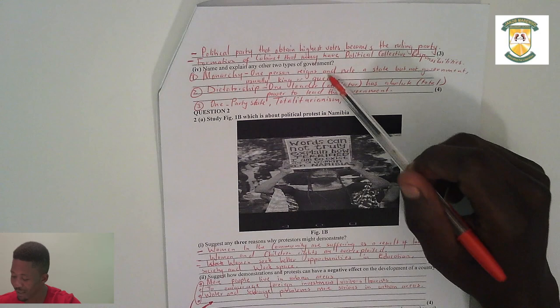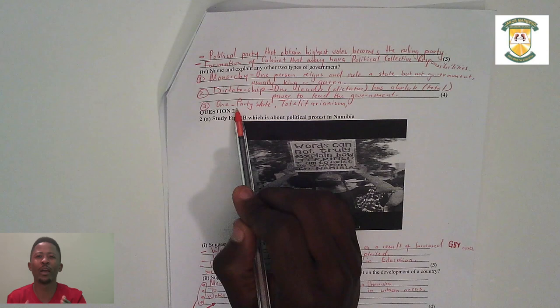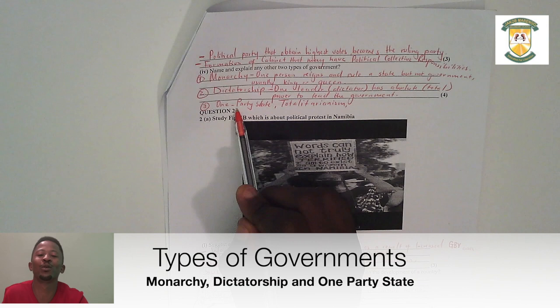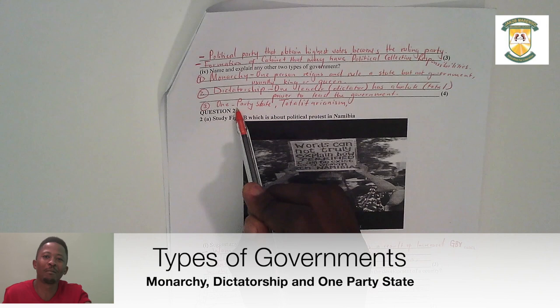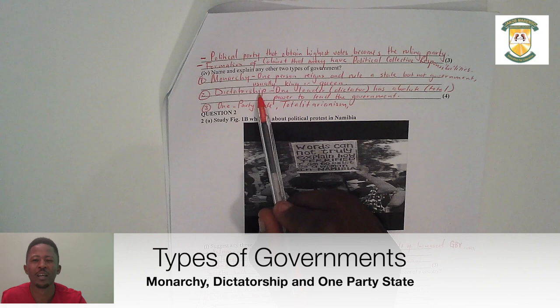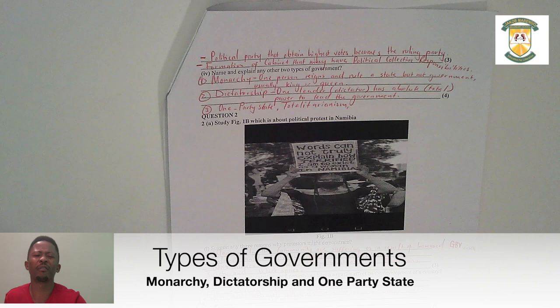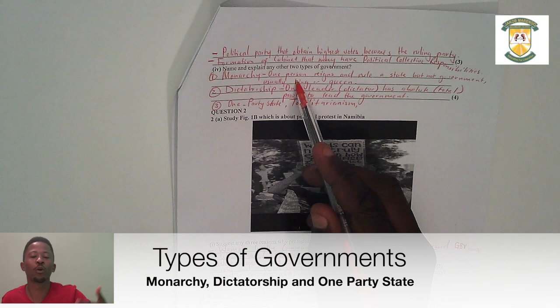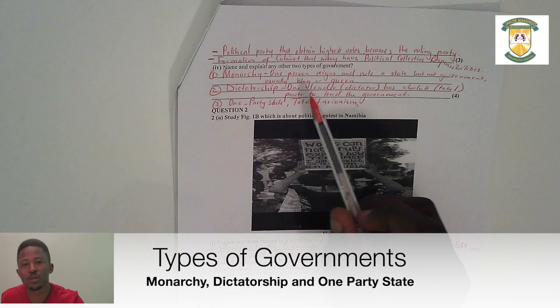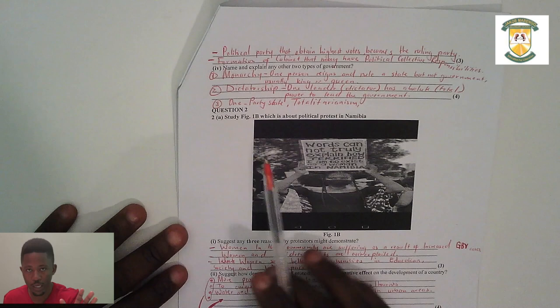The next question asks you to name and explain any two other types of government. We have a one-party state — as the name says, it is just one party that runs and governs the country; do not talk about many parties. We also have a dictatorship — for example, Idi Amin in Uganda had total power to lead the government. We can also have a monarchy, where a king or queen reigns and the position passes to the following generation.